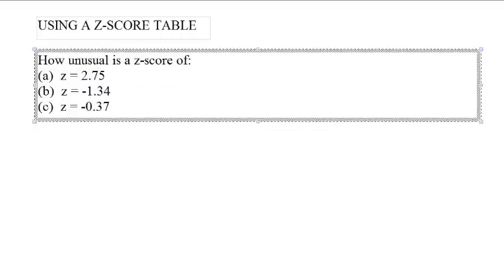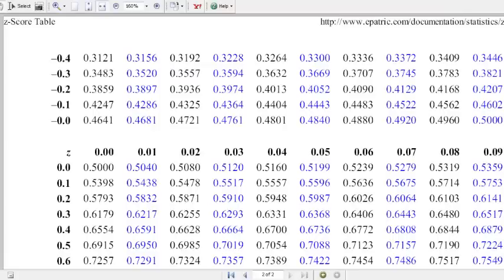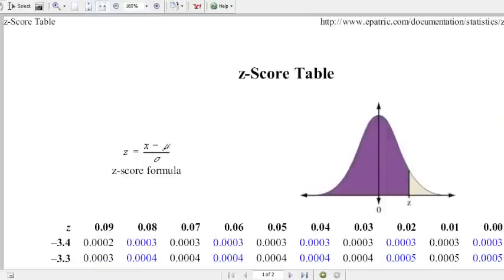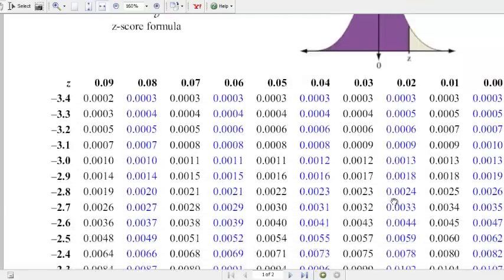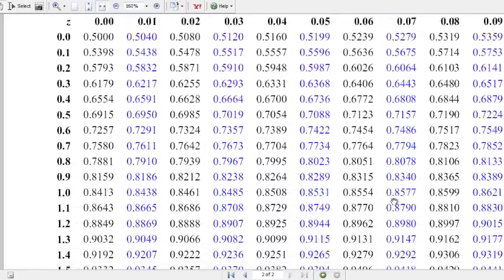But we can go to a z-score table. And on the z-score table, you see this nice picture. It says, oh look, we have everything up to the z-value. Right, and we want 2.75. These are all negative numbers. We go down to the next page.